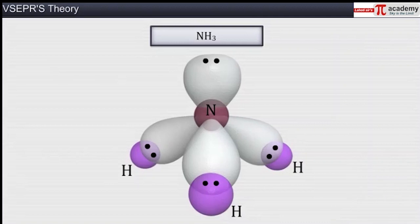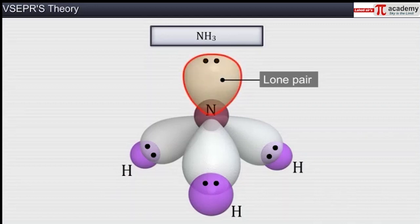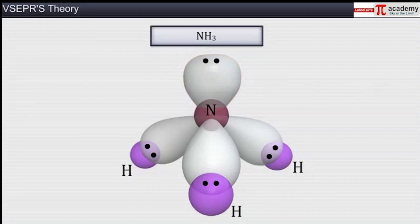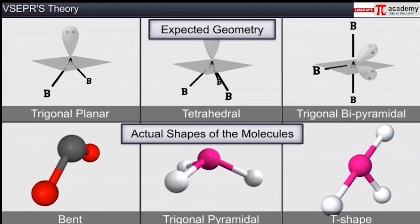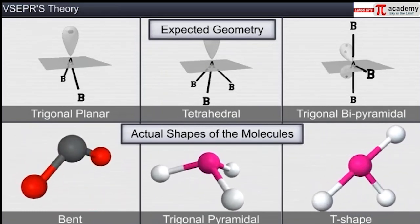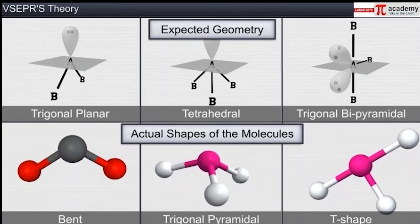However, the geometry of molecules gets distorted due to the presence of lone pairs of electrons. Unlike bonded pairs that are shared between two atoms, lone pairs of electrons are localized on the central atom. Due to this, they occupy more space, which results in greater repulsion. Thus, the geometry of molecules with lone pairs of electrons differs from the expected or regular geometry of molecules having only bond pairs.